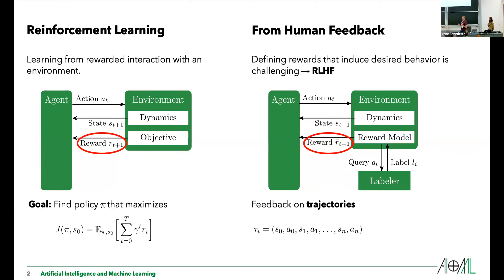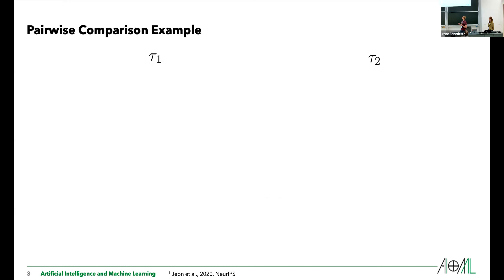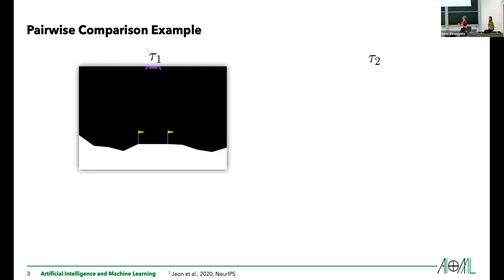We usually learn this reward function by repeatedly asking the labeler a query — feedback on trajectories, so entire sequences of behavior — and getting labels for those queries. The way this looks in practice is usually using pairwise comparisons, so you get shown two alternative trajectories.